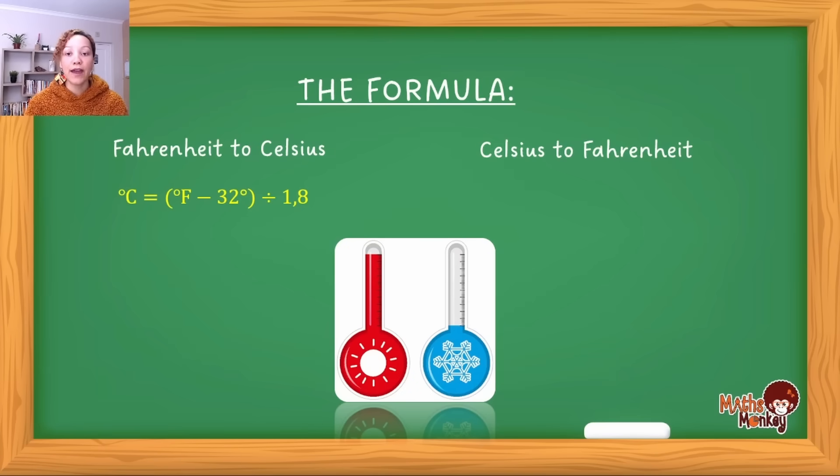For Fahrenheit to Celsius, this is the formula. It's easy to see because whatever comes after the equals must be what we're trying to calculate. Celsius is alone here: °C = (°F - 32) ÷ 1.8. This means I'm changing Fahrenheit to Celsius because Celsius is alone on the left.